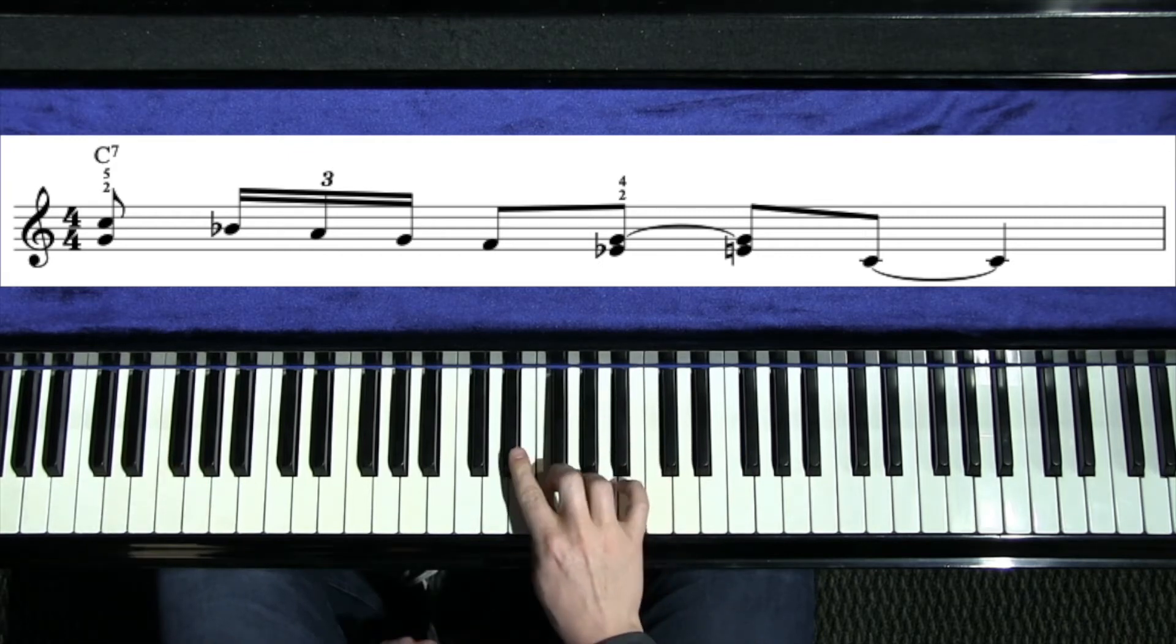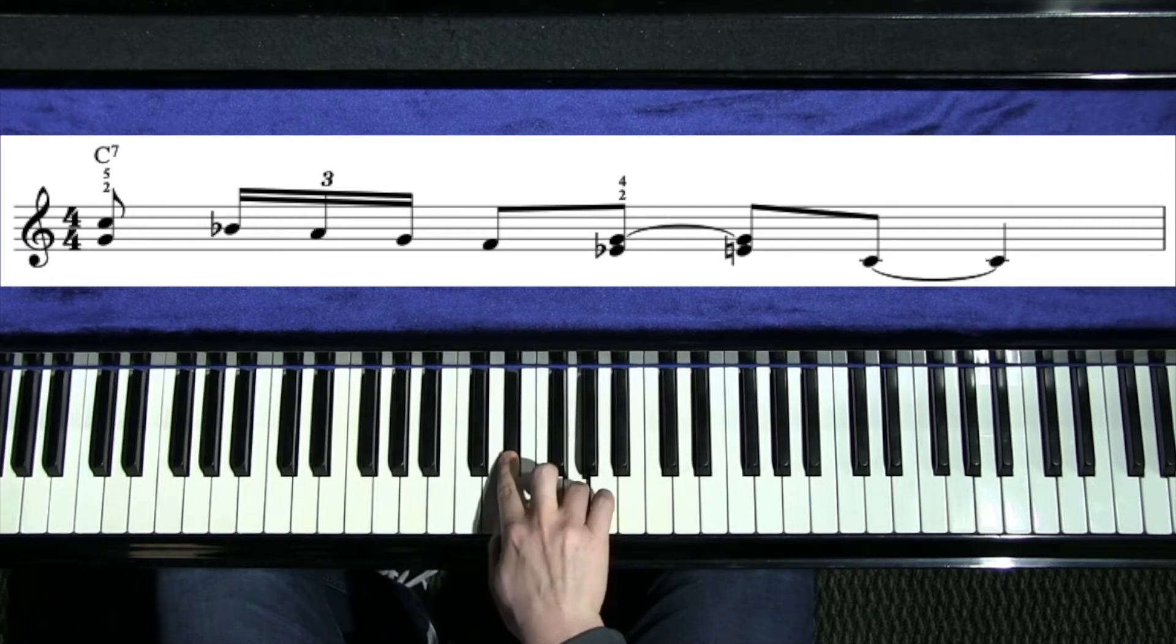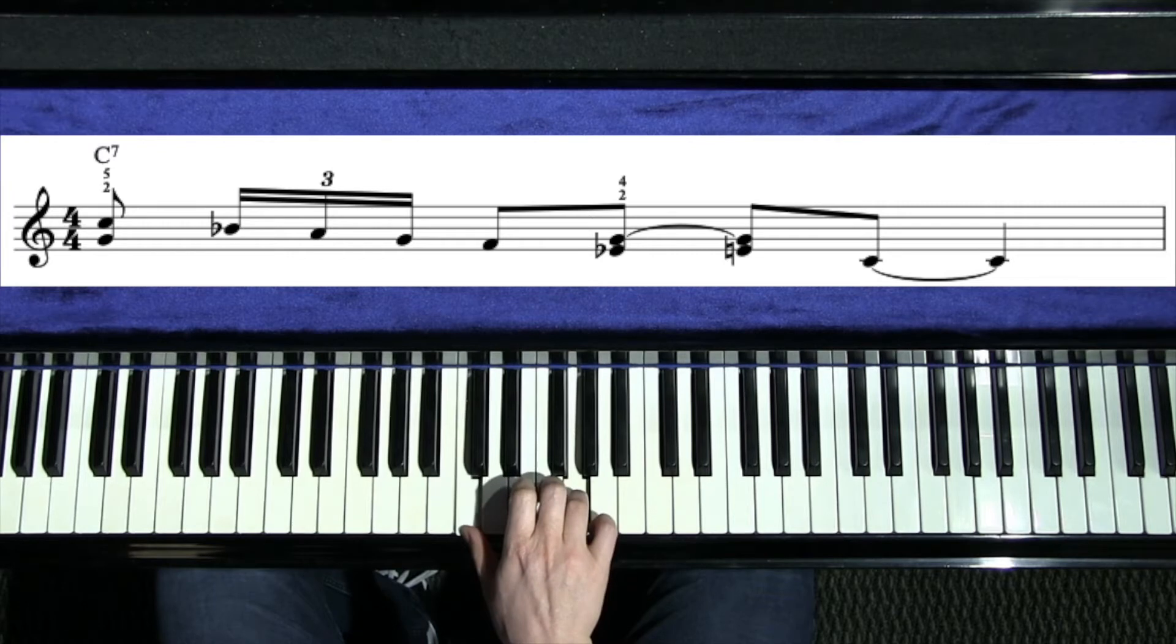So once I get down to F, that's on beat two. Then I'm going to cross over with finger two, and with two and four I'm going to play E flat and G, and then I'm going to slide up to the major third and then play at root after that.